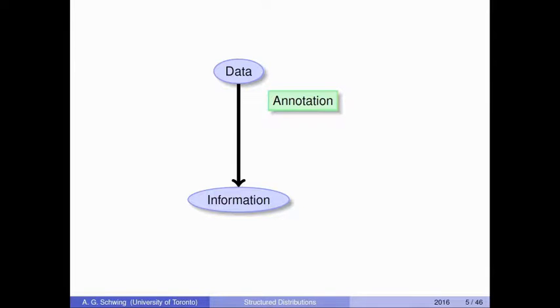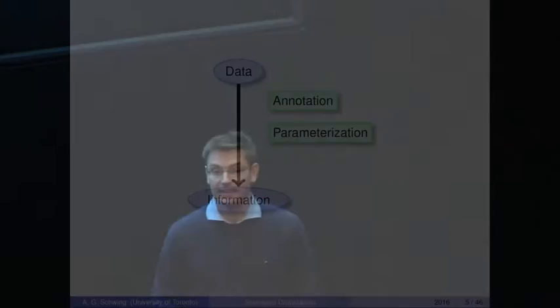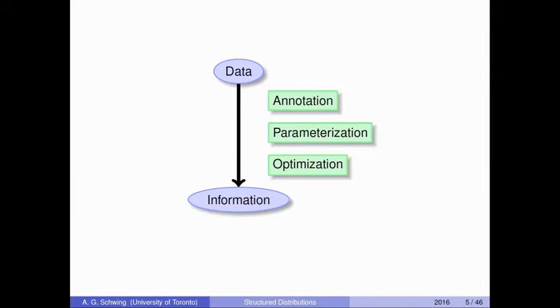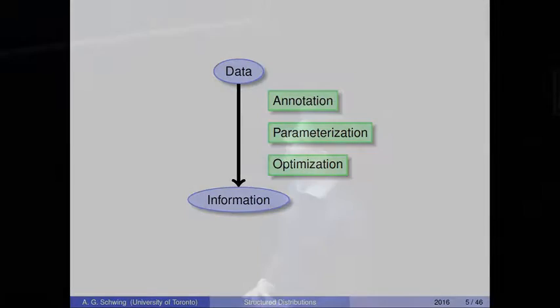After having annotated the data, we typically spend a lot of time thinking about, formalizing, and parameterizing the problem. While doing so, we better also keep an eye on two important optimization problems in machine learning: one being the inference and the other being the learning part. So what do I mean by annotation, parameterization, and optimization?